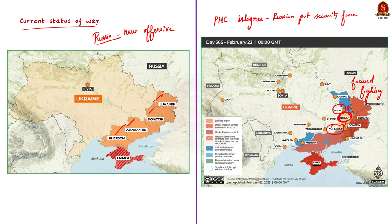On the Ukraine side, Ukraine is trying to hold on to its territories until more weapons and trained fighters arrive from the west. It would take a few more weeks before the main battle tanks arrive at the battlefield. This is the current status of the Russia-Ukraine war.